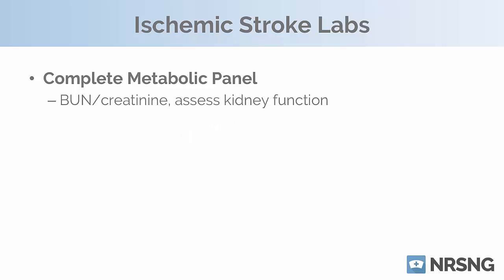Next are the BUN and creatinine, which assess kidney function. Normal BUN is 8 to 21, and normal creatinine is 0.5 to 1.2. It's really important to know baseline kidney function because at some point during the patient's stay, we'll likely get a CT with contrast or an MRI with contrast, and contrast is really hard on the kidneys. Additionally, diabetes commonly goes hand in hand with stroke, and long-standing diabetes — treated or not — can result in compromised kidneys.